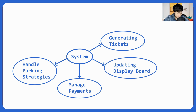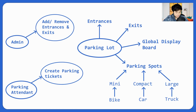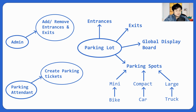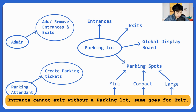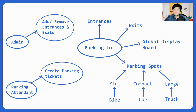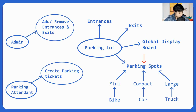We're pretty much done with the use case diagram. Now let's use all of it to create the class diagram. Parking lot is composed of entrances, exits, global display board, and parking spots. There should be a composition relationship here because entrances, exits, and the display board cannot exist without a parking lot — if they could exist independently, it would be an aggregation relationship. So we have a composition relationship throughout. We'll continue with the class diagram in the next lesson.